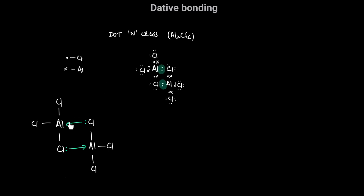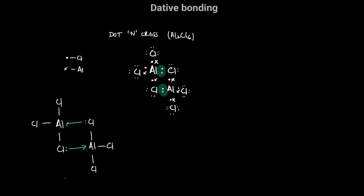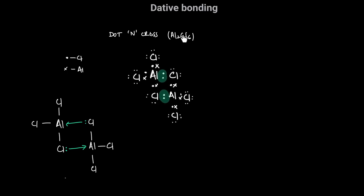Each chlorine that makes a single bond with aluminum normally has three lone pairs. In AlCl₃, three Al–Cl bonds involve shared electrons. For the bridging chlorine atoms, one lone pair is donated to make a dative bond, leaving them with only two lone pairs. The dot-and-cross diagram clearly shows that the bonds between each bridging aluminum and the chlorine from the neighboring AlCl₃ were formed by the chlorine donating its lone pair — that is the dot-and-cross diagram for Al₂Cl₆.